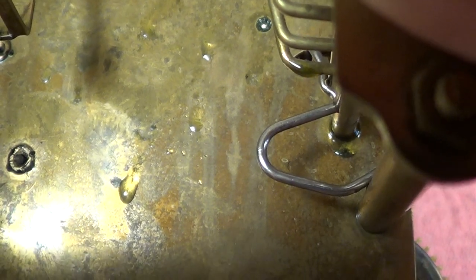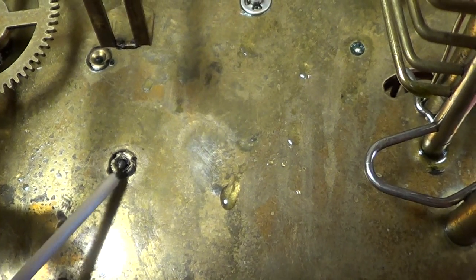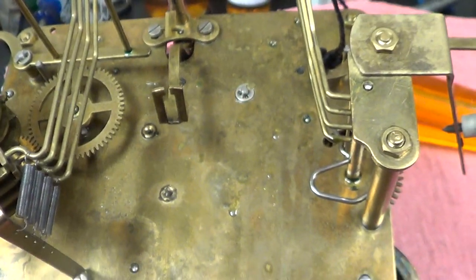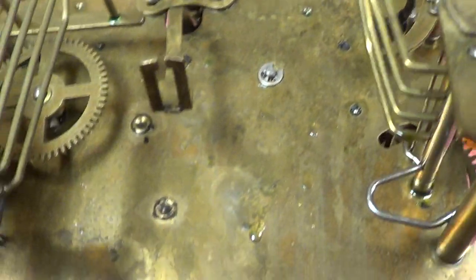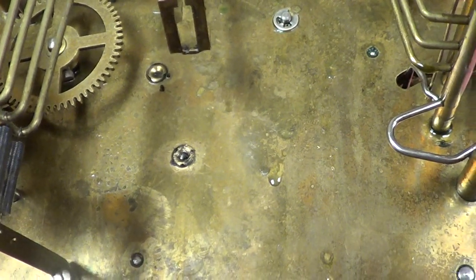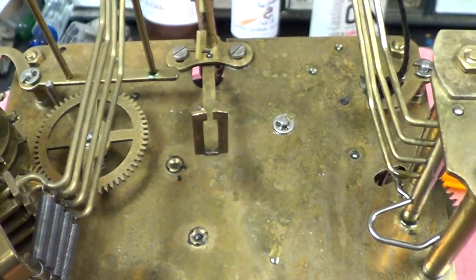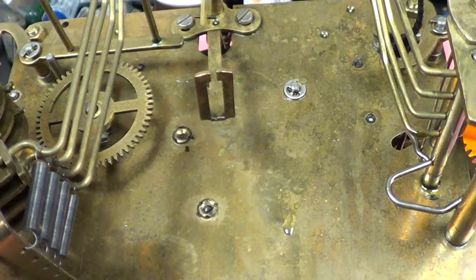So if you go in there with a reamer and try to ream that hole out and put a new bushing inside, you've got a bag of worms. I'm not a fan of them and I don't like them. You can see all three of these were put in that way. That's just because someone doesn't want to take the time, tear the clock down, do it right.